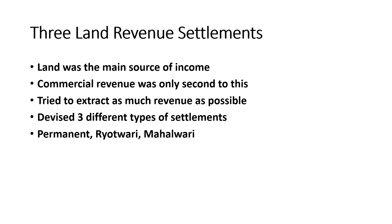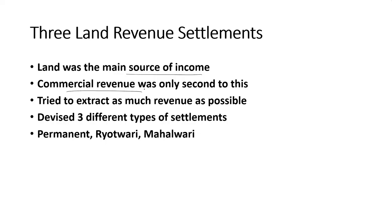As you know, the land revenue was the main source of the English East India Company. The territorial revenue formed the main income — that is, territorial revenue means the income from the land in the form of taxes, which formed the main source of income of the British. The commercial revenue, derived from trade and business, was only second. The main source was land revenue.